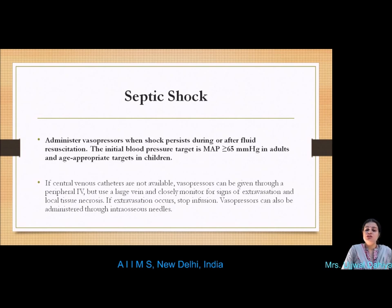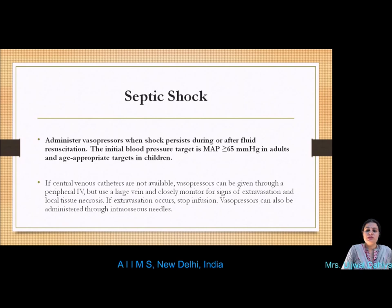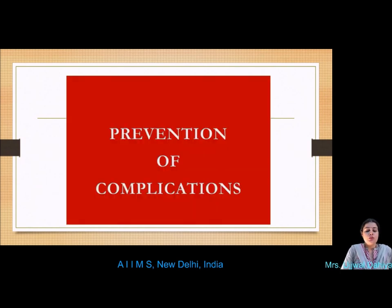Administer vasopressors when shock persists during or after fluid resuscitation. The initial target is to maintain mean arterial pressure above 65 mmHg in adults and age-appropriate targets in children. If central venous catheters are not available, vasopressors can be given through a large peripheral IV with close monitoring for extravasation and local tissue necrosis — stop infusion immediately if extravasation occurs. Vasopressors can also be administered through intraosseous needles. The goal is to prevent complications and reduce the number of days of invasive mechanical ventilation.